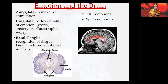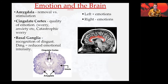The basal ganglia is associated with recognizing disgust, and damage results in the reduction of emotional intensity — how strongly you experience emotions. The left hemisphere is more active with positive emotions and the right hemisphere is more active with negative emotions. We're going to watch a short video about emotion and the brain now.